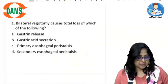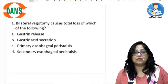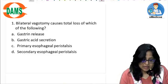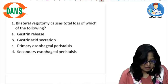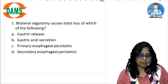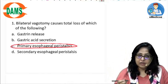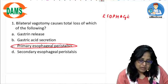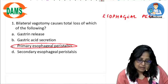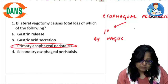Let's discuss the physiology questions in the grand test. The first question says bilateral vagotomy causes total loss of which of the following. The key word here is 'total loss.' The answer is primary esophageal peristalsis. Esophageal peristalsis is of two types: primary and secondary. Primary esophageal peristalsis is mediated by the vagus during swallowing.